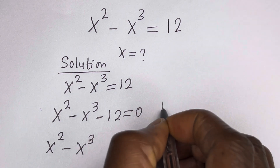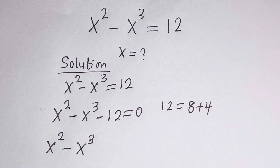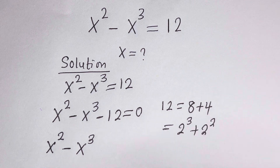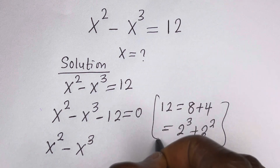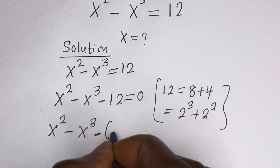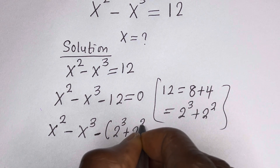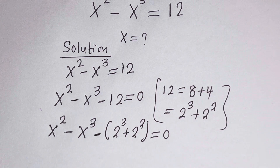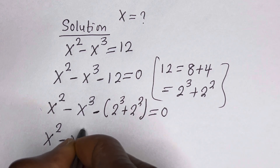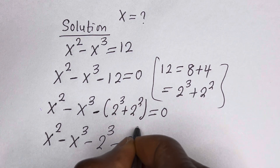Now, 12 is equal to 8 plus 4, and this is the same thing as 2 raised to power 3 plus 2 squared. Then here is minus bracket 2 raised to power 3 plus 2 squared, giving us s squared minus s raised to power 3 minus 2 raised to power 3 minus 2 squared is equal to 0.